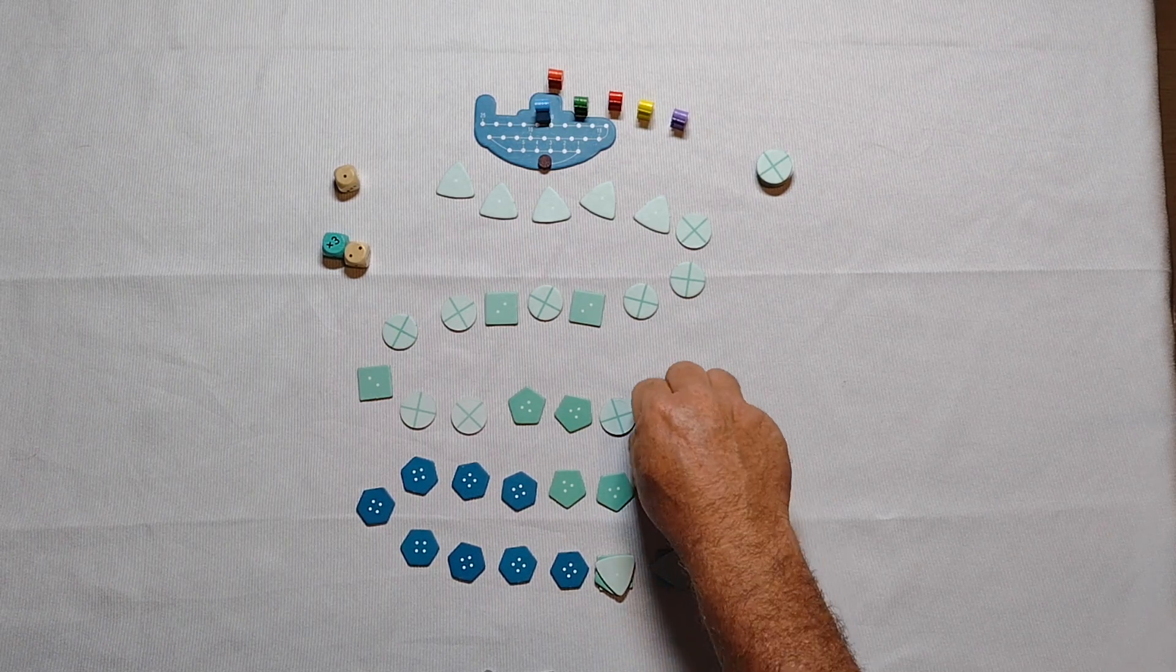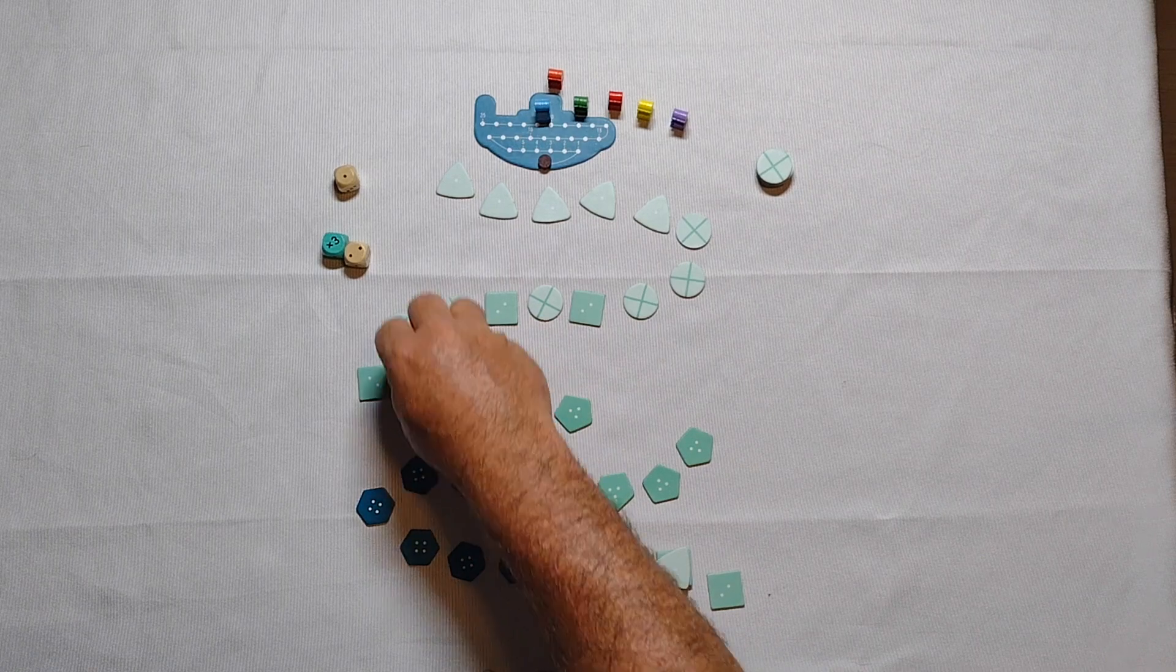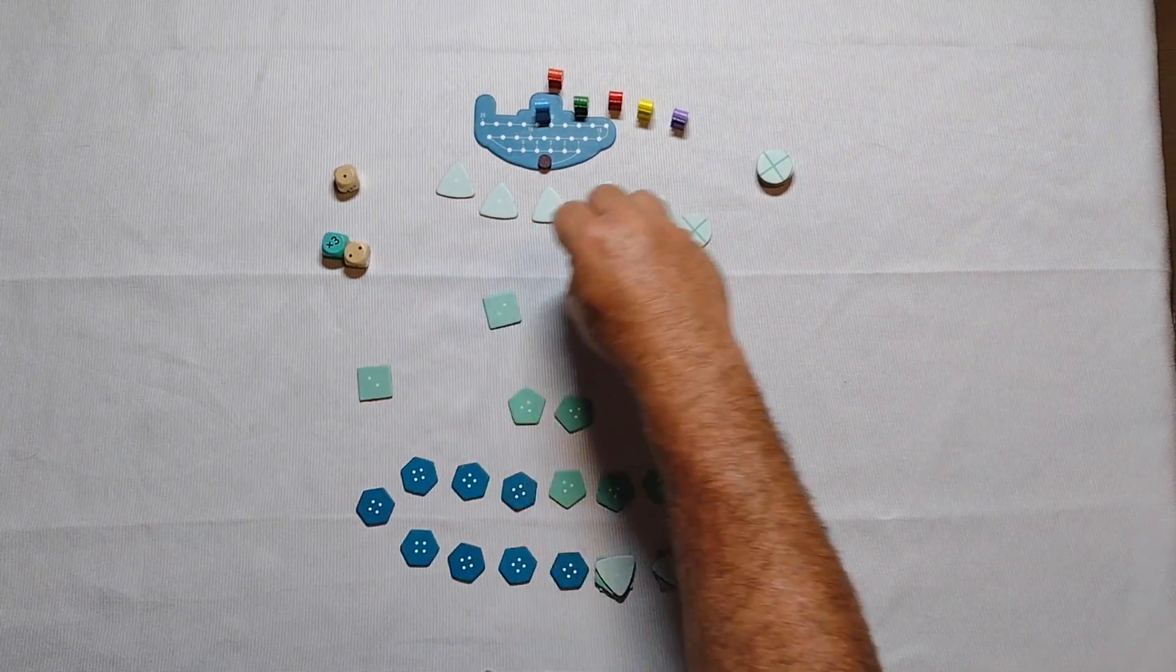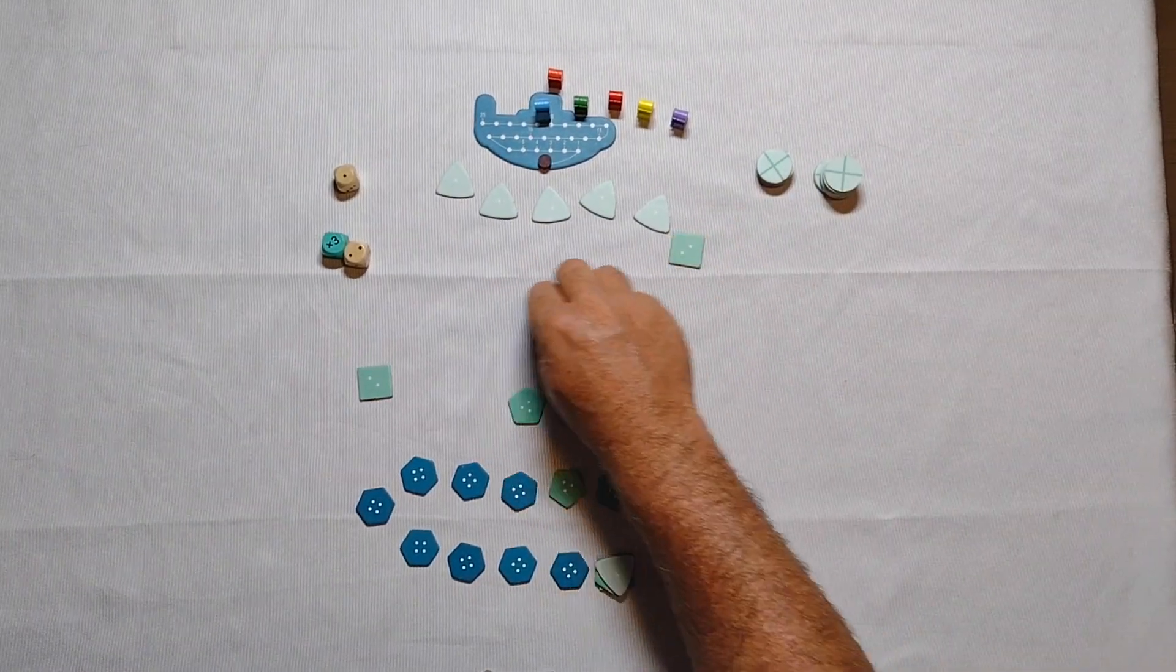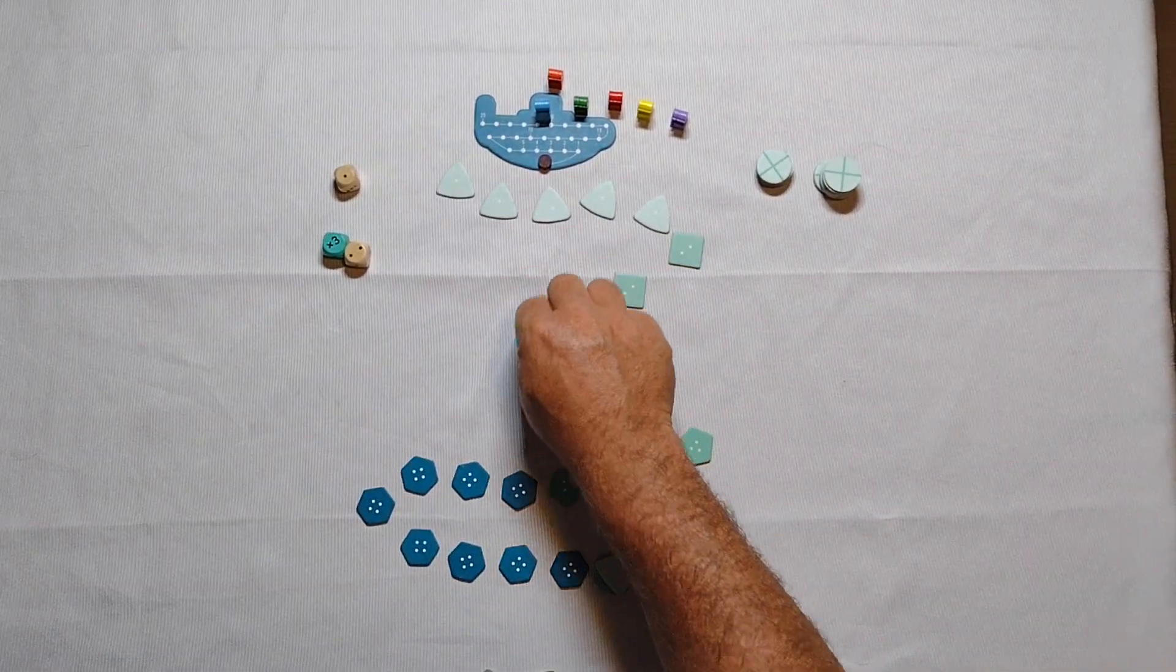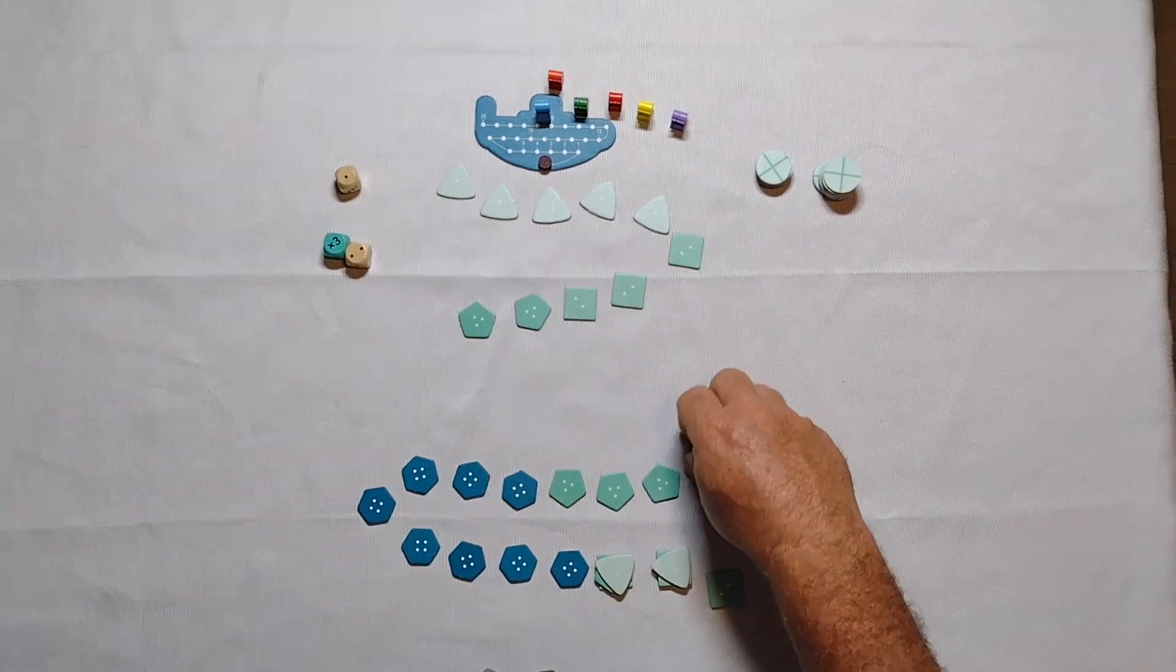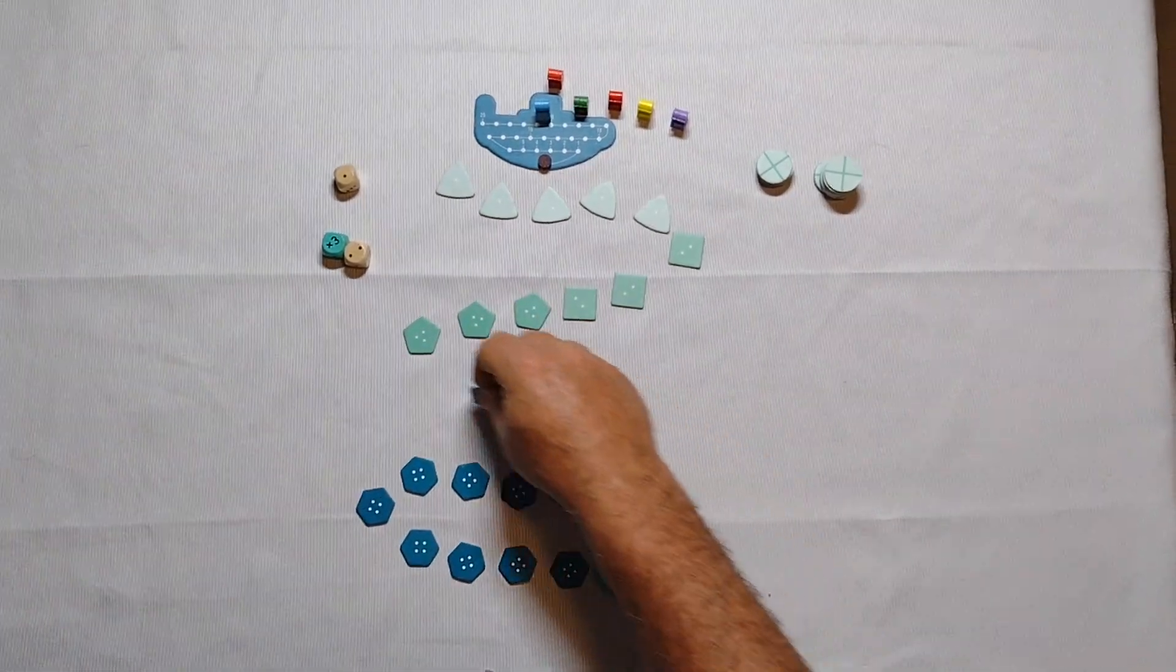To get ready for the next dive, remove all of the round markers from the line of sea treasures and move the other tiles up to meet them, making a shorter line reduced by all the treasures that have been brought up to the ship.